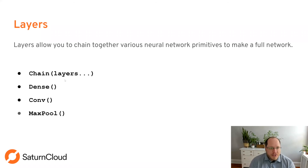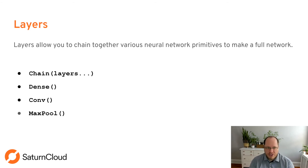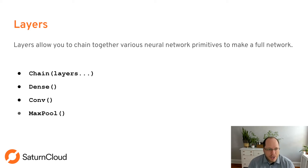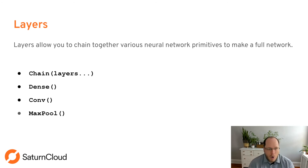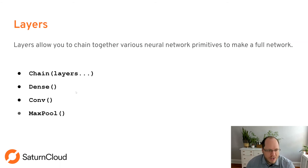The next concept is layers — a high-level abstraction that lets you chain together neural network primitives into a full network, very similar to PyTorch or TensorFlow. You can chain together layers like a Dense layer (fully connected), convolutional layers, or a MaxPool layer. We're going to experiment with all of those in the example. There's much more to the list but these are the ones we'll be using.